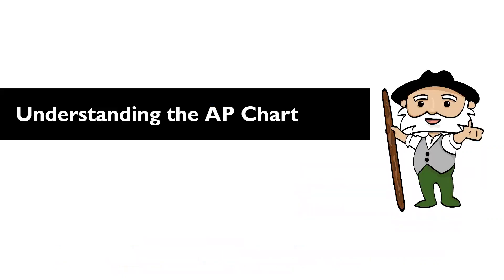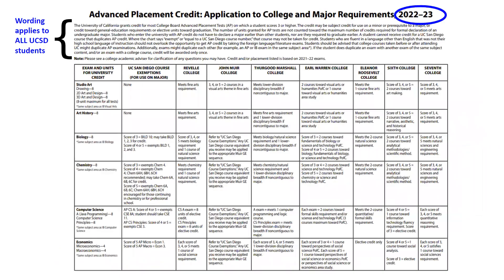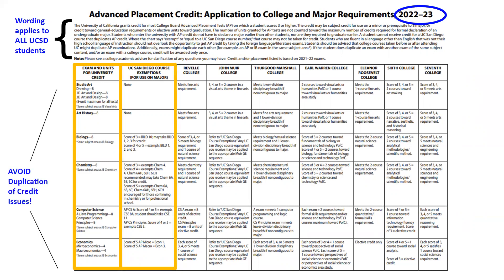Now let's understand how to read the AP chart. Since this is a university-wide document, it has a lot of information. What you need to know as a Muir College student is the column Exam and Units for University Credit — all the AP exams are listed alphabetically, and this column clarifies how many units are earned from that exam based on your score. The column UC San Diego Course Exemptions clarifies whether your exam score also granted you credit for a specific UCSD course. This is also referred to as a course approximation or course equivalency.